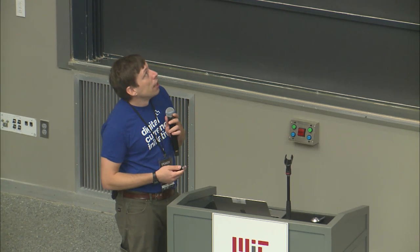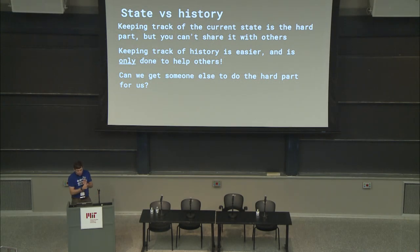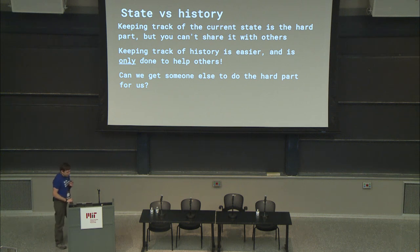I want to look at the state versus the history, which is what prompted the ideas of Utreexo. Keeping track of the current state is really the hard part — it's very disk intensive with a lot of databases. And you can't share that state with others in a usable way because you might be lying — you might have added your own coins. Keeping track of history is easier, and it's only done to help others. If you keep all the blocks you can give them to others because they can verify all the signatures and verify all the work.